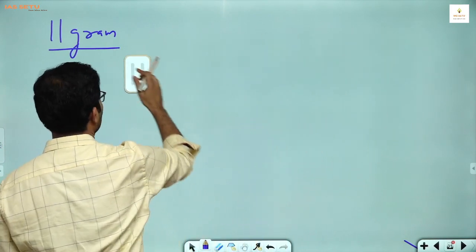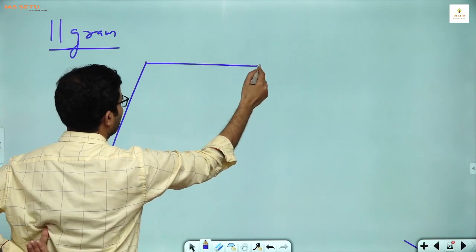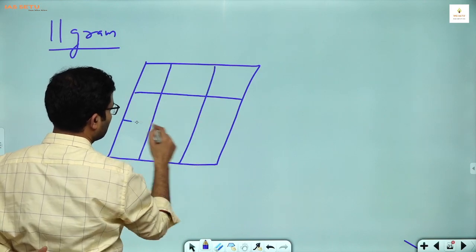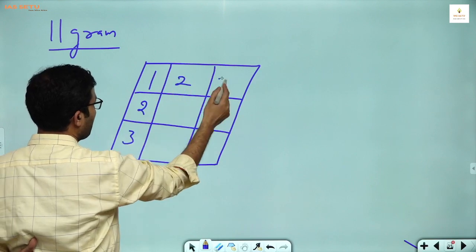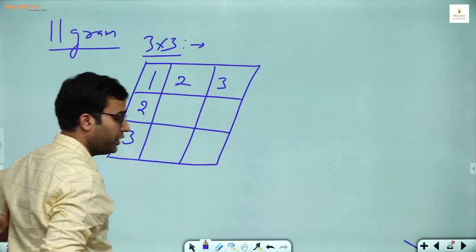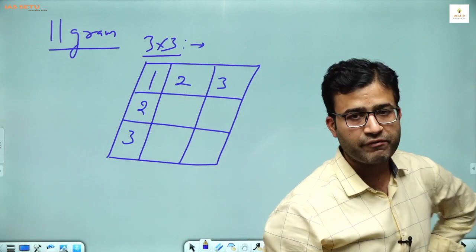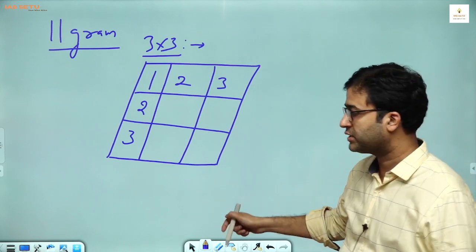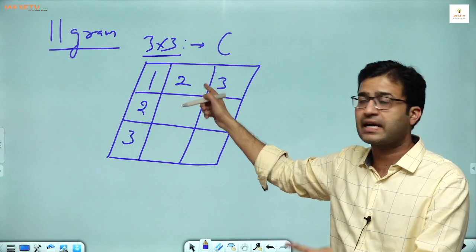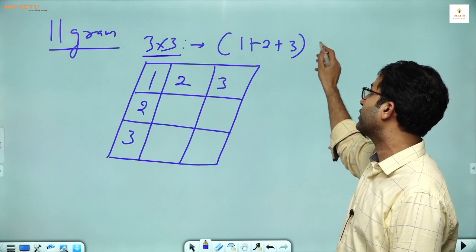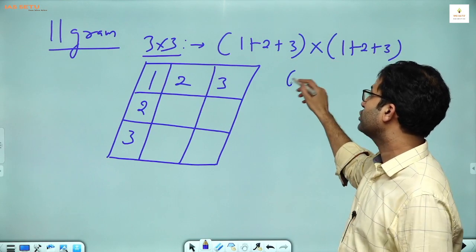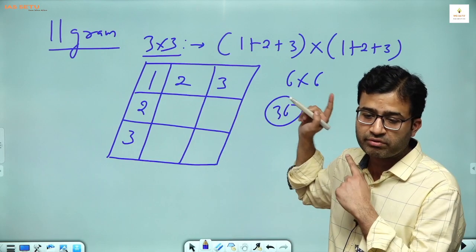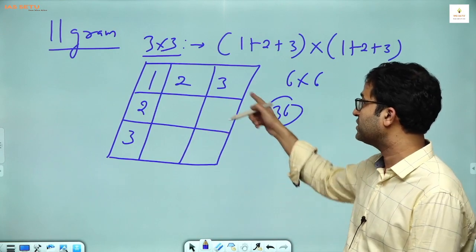In a parallelogram, where we have vertical and horizontal cells — this type of diagram — Type 1 question: this is 1, 2, 3 and this is 1, 2, 3, so this is a 3 by 3 figure. To count the number of parallelograms, there is a shortcut — same as rectangle: bracket start 1 plus 2 plus 3, into second bracket start 1 plus 2 plus 3. This is 6 into 6 equals 36. In the given figure we have 36 parallelograms.